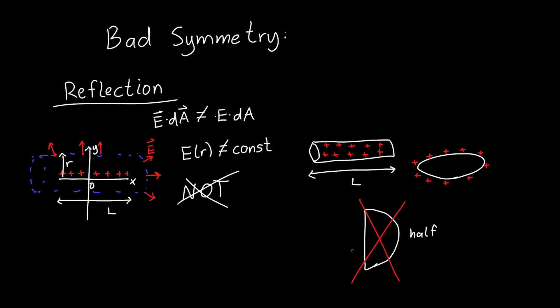In summary, to use Gauss's law easily you need some type of infinite symmetry: either infinite along one direction (1D translational), two directions (2D translational), or in all directions (spherical symmetry). In all other cases, Gauss's law is technically valid but not easy to use.